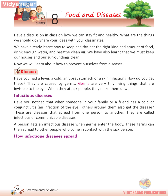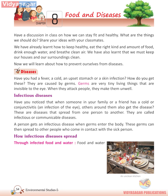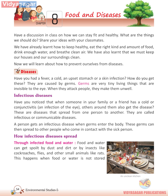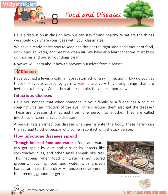How infectious diseases spread — Through infected food and water. Food and water can get spoiled by dust and dirt, or by insects like cockroaches, flies, and other small animals like rats. This happens when food or water is not stored properly. Touching food and water with unclean hands can make them dirty. An unclean environment is a breeding ground for germs. Eating infected food and drinking infected water makes the germs enter the human body and cause disease. Food poisoning, diarrhea, typhoid, and cholera are some of the diseases that spread this way.